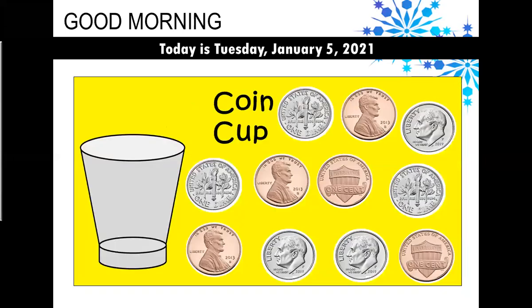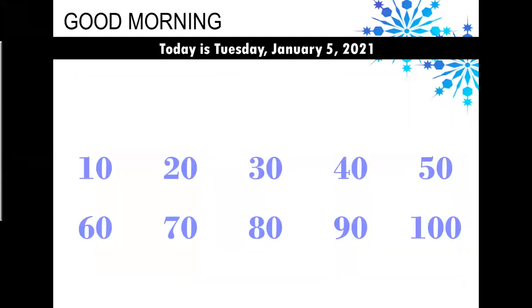Oh boy, we have lots of coins in the coin cup today. And I thought it would be interesting to mix them up rather than put them all together. So in order to count these, we need to count the dimes first, and then the pennies. Dimes are counted by 10s. Let's go ahead and count by 10s together.